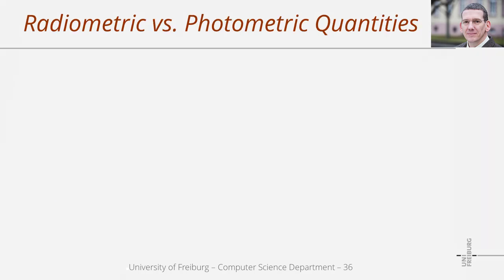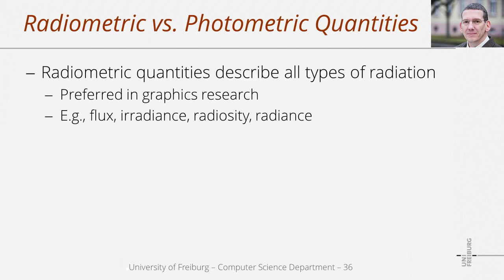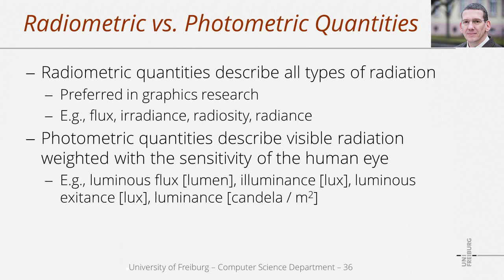Before the end of this presentation, I would like to briefly discuss the relation between radiometric and photometric quantities. Radiometric quantities do not only apply to light but can be used for all types of radiation. In addition, there exist photometric quantities that are particularly used to characterize light: flux is for general radiation, while luminous flux is the same quantity for light; irradiance is for general radiation, while illuminance is the same quantity for light. In graphics research, however, radiometric quantities are generally preferred.